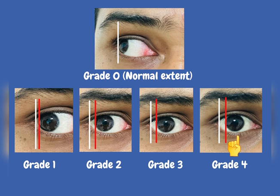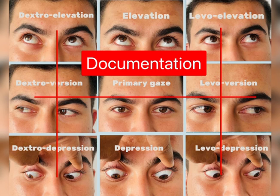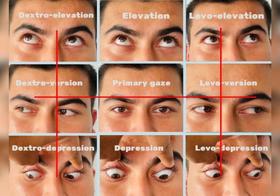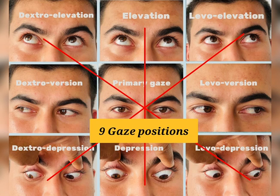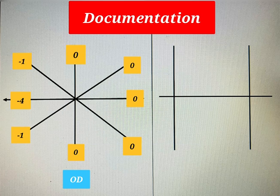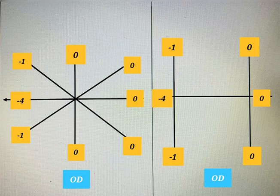A diagrammatic representation of ocular motility examination findings demonstrates the ocular motor deficit and provides a logical approach to diagnose and treat the condition. Documentation can be done in a broad age test and graded from zero to four based on the grading system. A plus indicates over-action, minus indicates under-action, and it measures the six cardinal points of the eye. One can also measure all nine gaze positions. The picture here shows recordings of the extraocular muscle motility for the right eye, but it should be measured for both the right and left eye.